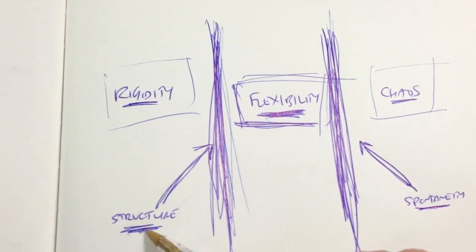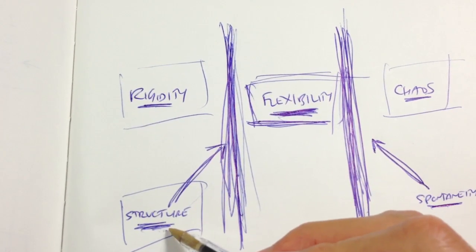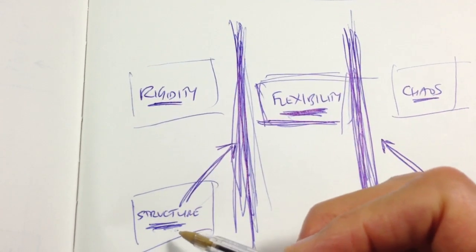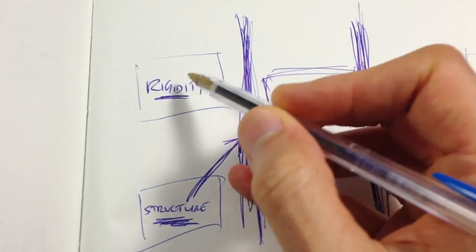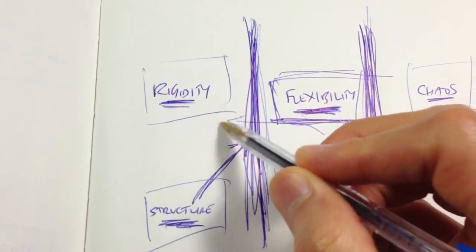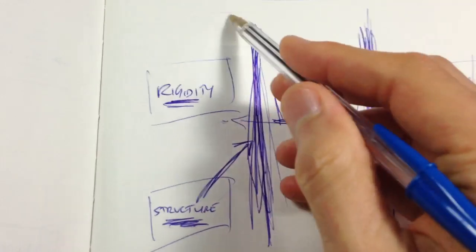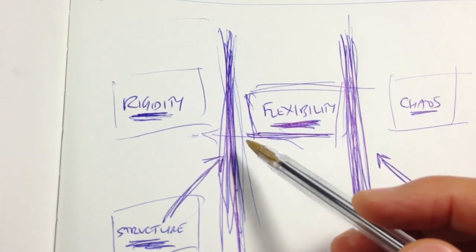Now if you have too much structure, and you get kind of locked into this really authoritarian, everything's got to be exactly this way every single day structure, you get into rigidity. You're overflowing, you're flooding this side, this bank is overflowed with too much structure, you get rigidity.